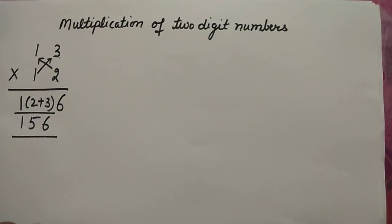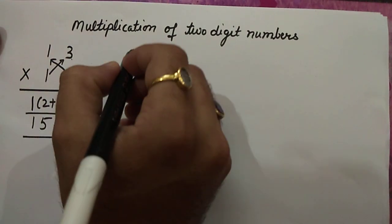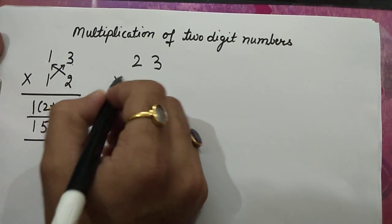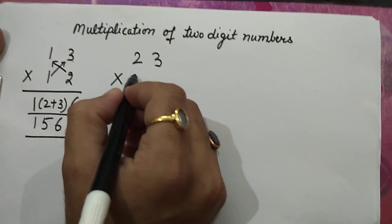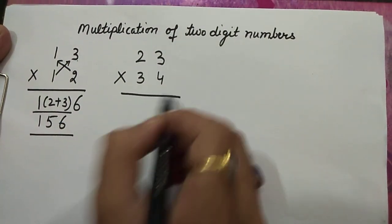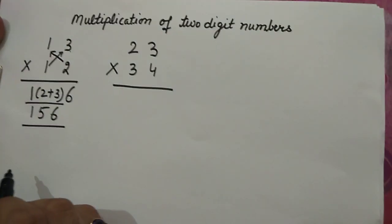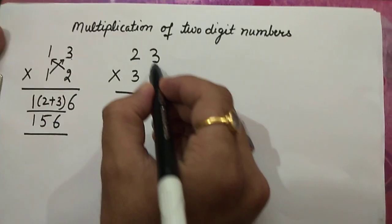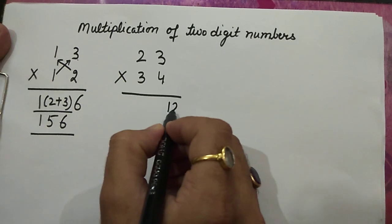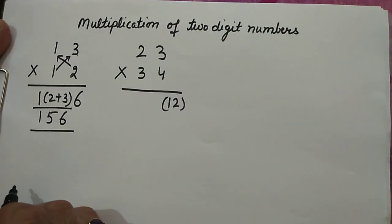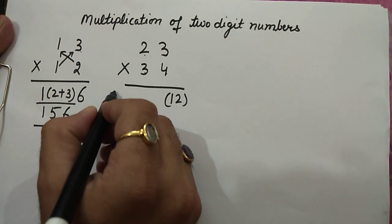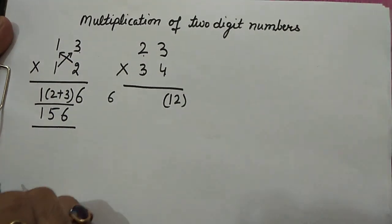Let's take another example: 23 multiply 34. Let's see how we should multiply it. 4 times 3 is 12, write 12 here. Then 3 into 2, it is 6.